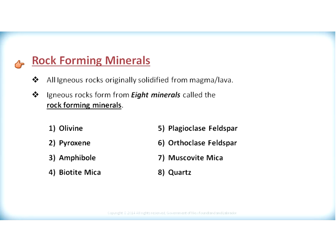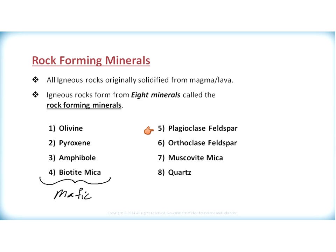When looking at the rock-forming minerals, all igneous rocks originally solidified from magma or lava — that is, they form from a once-molten material. Igneous rocks form from eight minerals called the rock-forming minerals: olivine, pyroxene, amphibole, and biotite. These four minerals make up the composition known as mafic. The remaining four are plagioclase feldspar, orthoclase feldspar, muscovite mica, and quartz, which make up the felsic composition.